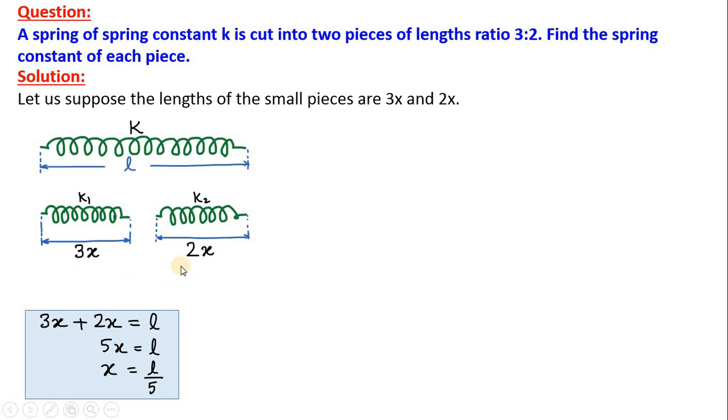That means 5x is equal to L and hence x is equal to L by 5. So, we found the value of x as L by 5. Put x is equal to L by 5 here, you will get 3L by 5 as the length of the first spring. And similarly, putting x is equal to L by 5, 2 into L by 5 is the length of the second spring.